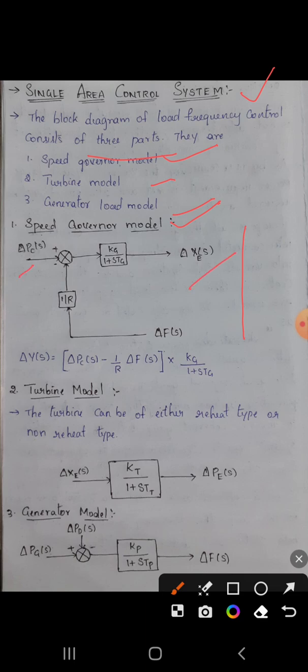The output will be delta Xc(s), and this will be the gain with feedback. Delta Y(s), which is delta Xc(s), can be written as output: delta Pc(s) minus delta f(s) times 1/R. So we multiply the feedback to get this equation, and from this we already have the diagram.